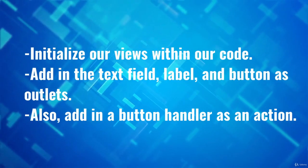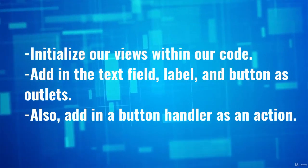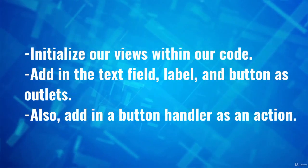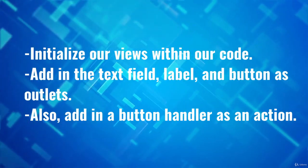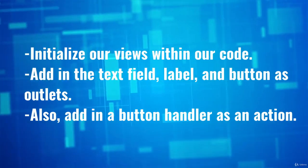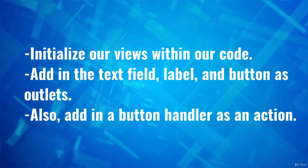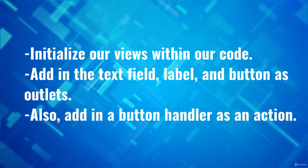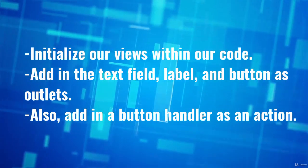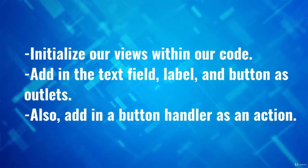Now it's time to initialize our views within our code. We've added three items to our layout in main.storyboard: a text field, a label, and a button. The text field handles the input, the label displays the input, and the button is what causes the label to actually display that text. We're going to add the text field, the label, and the button as outlets.